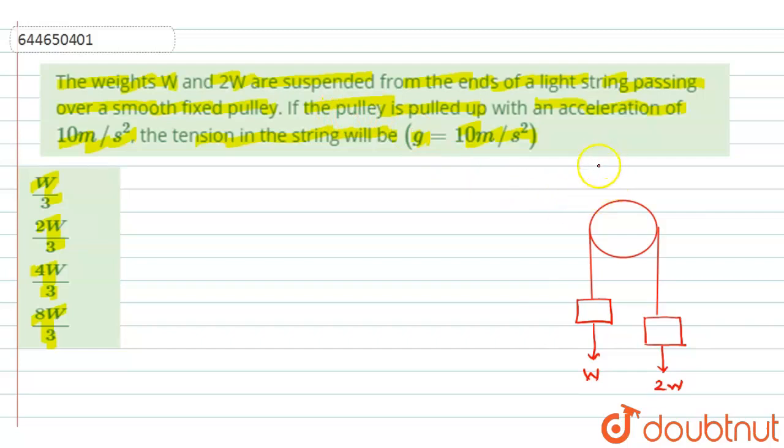Now the pulley is being pulled up with an acceleration of 10 meter per second square. So this pulley or the system is being moved up with 10 meter per second square. If the pulley is being pulled up with 10 meter per second square, then there will be a pseudo force acting on both the blocks.